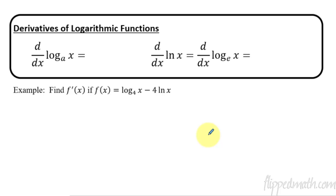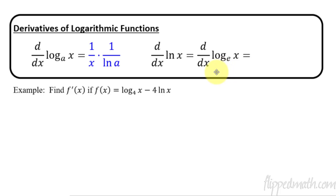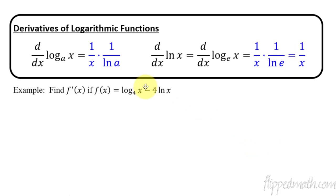Now let's do some logarithm functions. If you have log base a of x, the derivative is going to be 1 over x times 1 over the natural log of that number. This will seem confusing at first, but you'll do so many of these throughout the year it'll become simple. Now if we have the natural log of x, remember that natural log of x is equivalent to log base e of x — it's base e. So the derivative becomes 1 over x times 1 over the natural log of e, which equals 1. So it simplifies to just 1 over x.